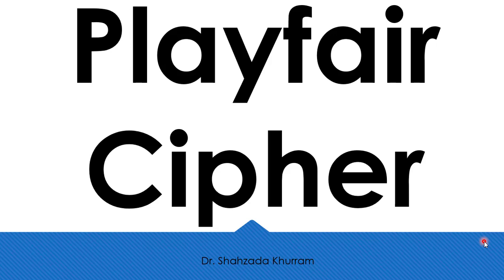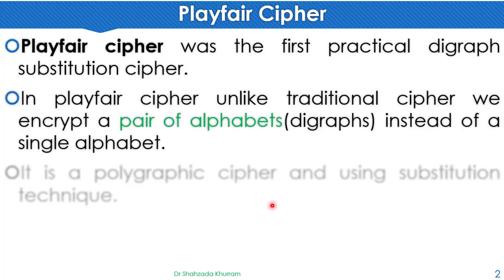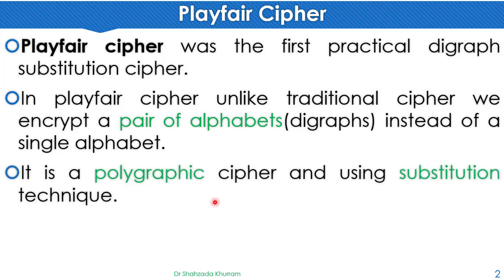Bismillahirrahmanirrahim. Hi everyone, today's topic is Playfair cipher. In this video we will learn how encryption works in Playfair cipher. Playfair cipher was the first practical digraph substitution cipher. Digraph means a pair of alphabets or combination of alphabets used together. In Playfair cipher, unlike traditional cipher, we encrypt a pair of alphabets — diagraphs — instead of single alphabets. It is a polygraphic cipher using substitution technique.